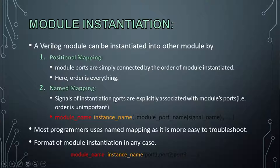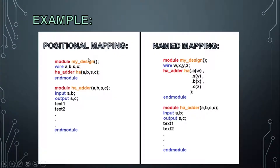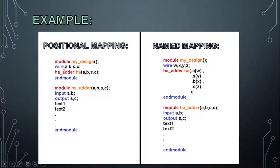We have two examples here. The first defines positional mapping and the second defines name mapping. In positional mapping, since this module is the half adder, we write the module name 'half_adder' followed by the instantiation name — we'll call it 'HA', though you can define it as anything you want — followed by A, B, S, C.